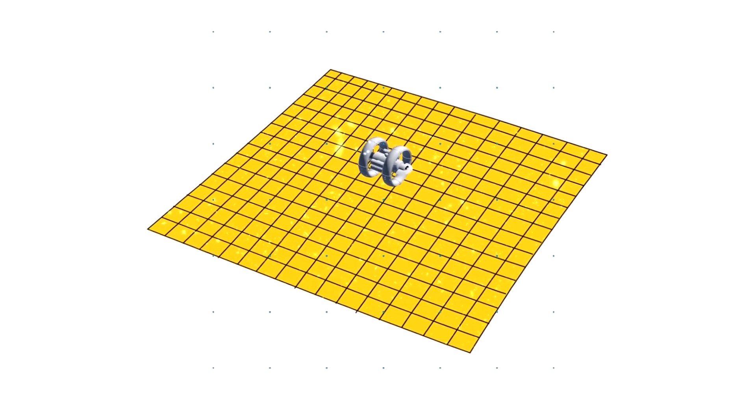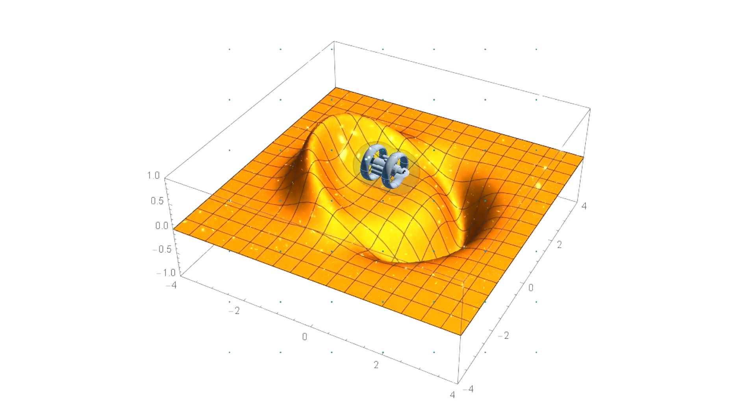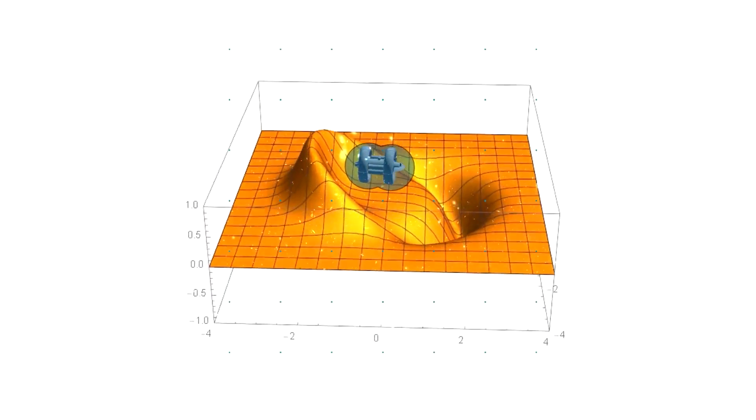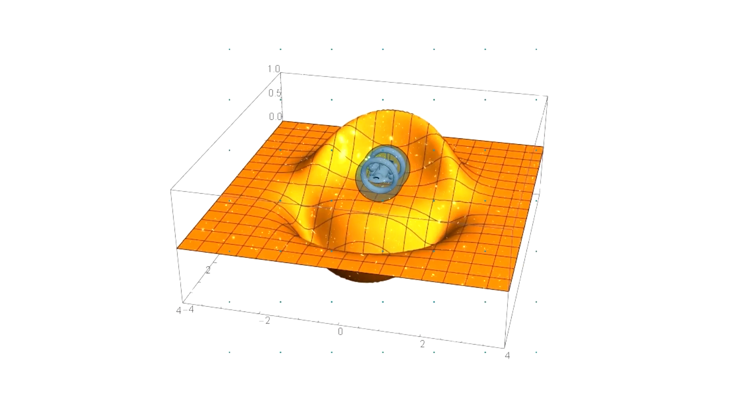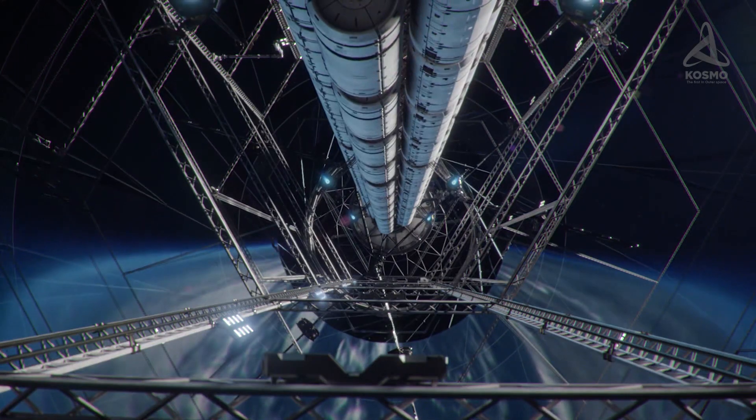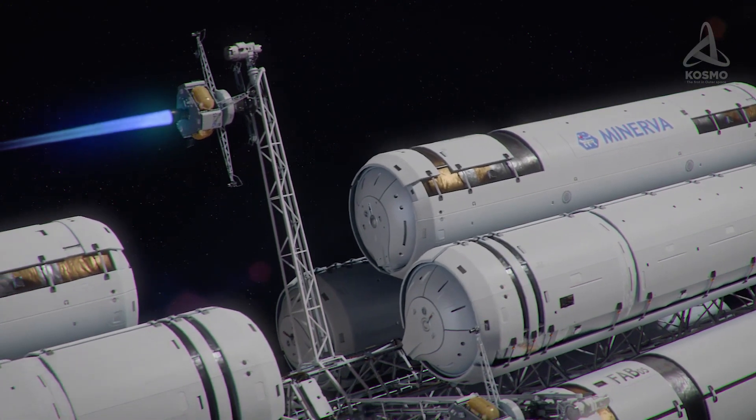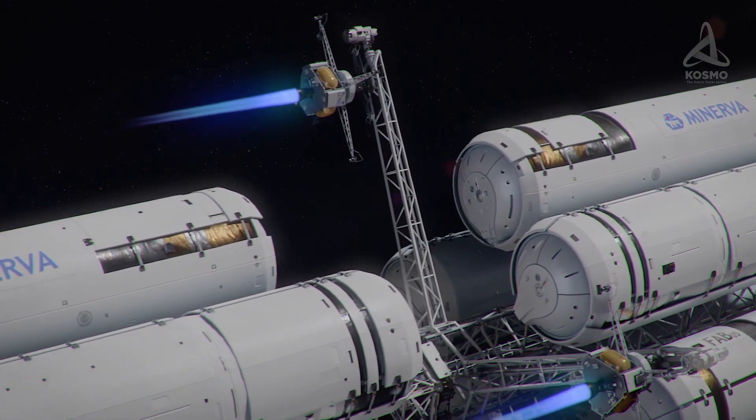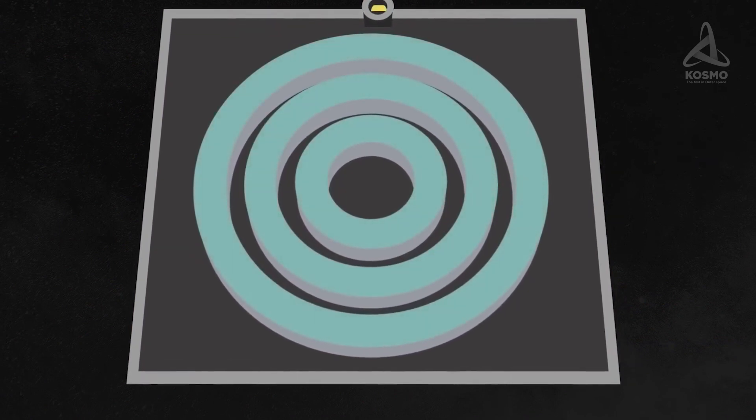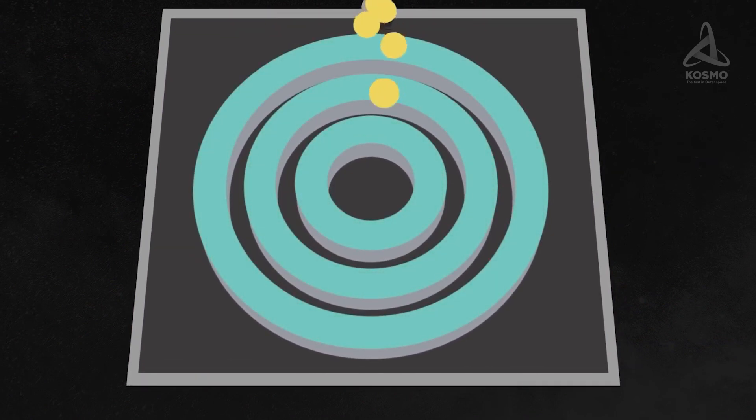Apart from the futuristic warp drives, however, there is a great number of projects which are not less exciting and more down-to-earth, as it were. The ion thruster is one of them, with several organizations currently working on it.